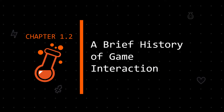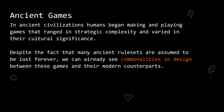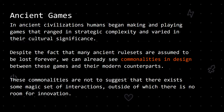A brief history of game interaction. As ancient civilizations bloomed thousands of years ago, people began making and playing games. These games ranged in strategic complexity and varied in their cultural or religious significance. Some of the earliest artifacts related to games are small tokens unearthed at burial sites in southern Turkey dating back to the 3rd millennium BCE. The tokens are thought to have functioned as game pieces, similar to other objects found throughout Mesopotamia from the same period. More substantial remnants exist for games played in Sumeria and Egypt around the same time. Despite the fact that many ancient rule sets are assumed to be lost forever, you can already see commonalities in design between these games and their modern counterparts. These commonalities are not to suggest that there exists some magic set of interactions outside of which there is no room for innovation.